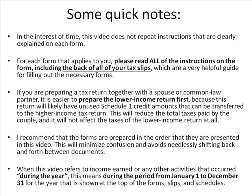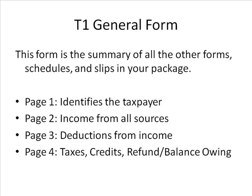When this video refers to income earned or any other activities that occurred during the year, this means during the period from January 1st to December 31st for the year that is shown at the top of the forms, slips, and schedules. The T1 General Form is the summary of all other forms, schedules, and slips in your package. Page 1 identifies the taxpayer. Page 2 shows income from all sources. Page 3 shows deductions from income. Page 4 shows the taxes, credits, and refund or balance owing.